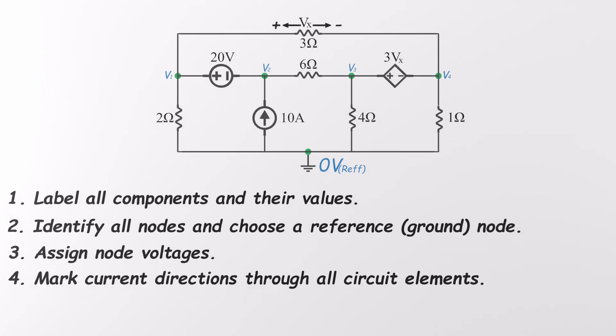Start with the current source. Its direction is already shown by an arrow, so we'll go with that. It's supplying 10 amps in this branch. Now for the resistors, we'll label their currents as I1 through I5. You can choose any direction you like. If you guess wrong, no worries. The math will just give a negative answer to show the real direction. One important note, make sure your voltage polarities match the direction you chose for current. That keeps everything consistent and makes the math easier. All right, let's keep going.